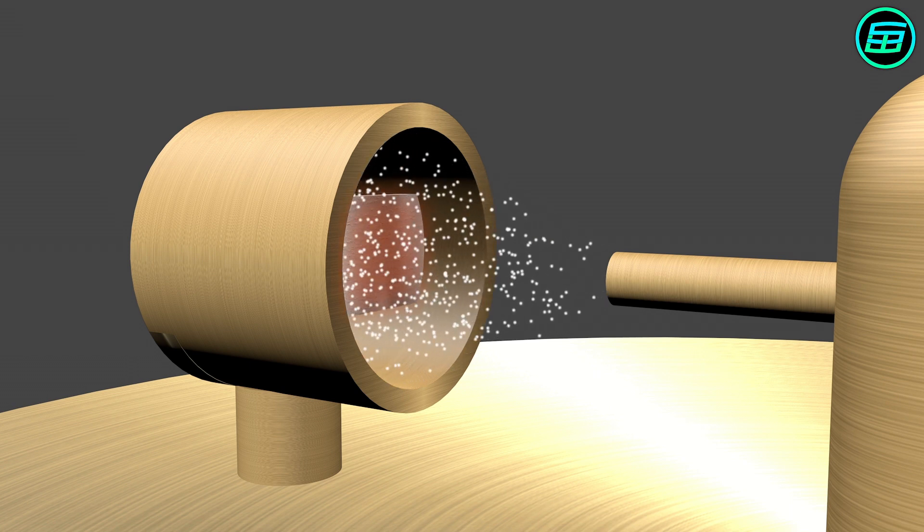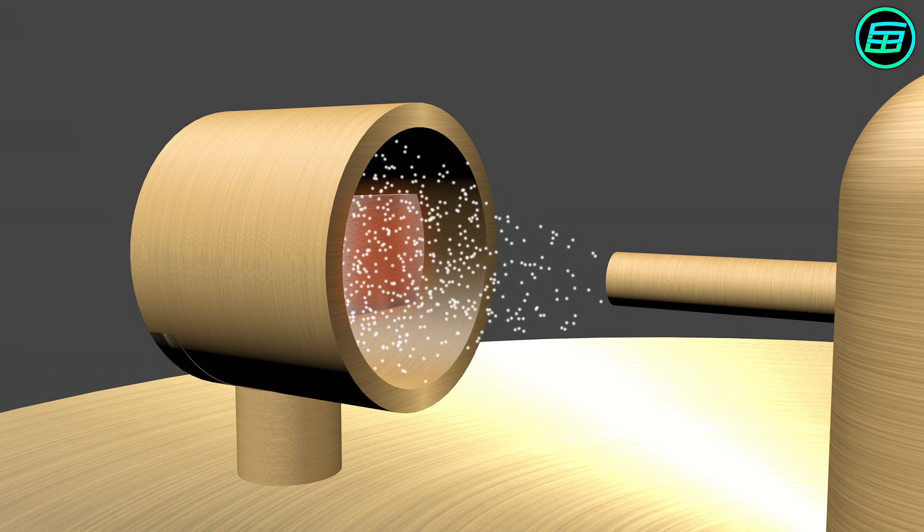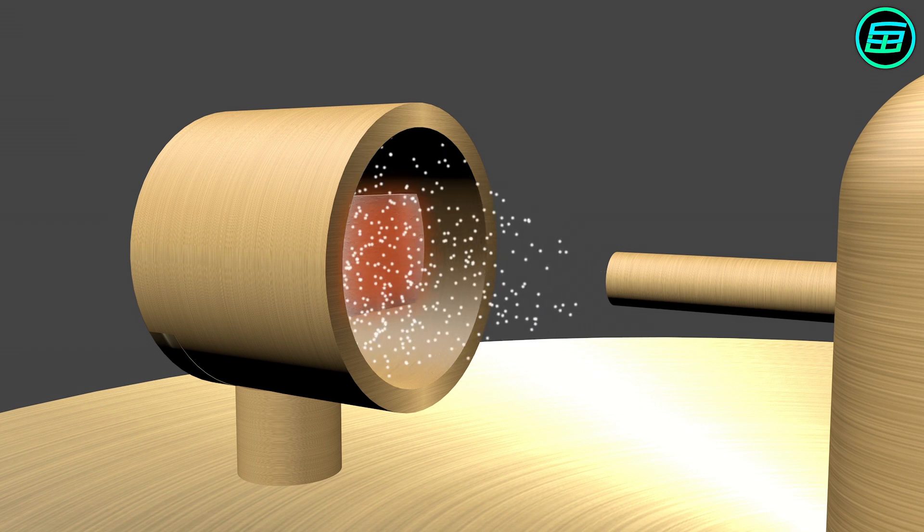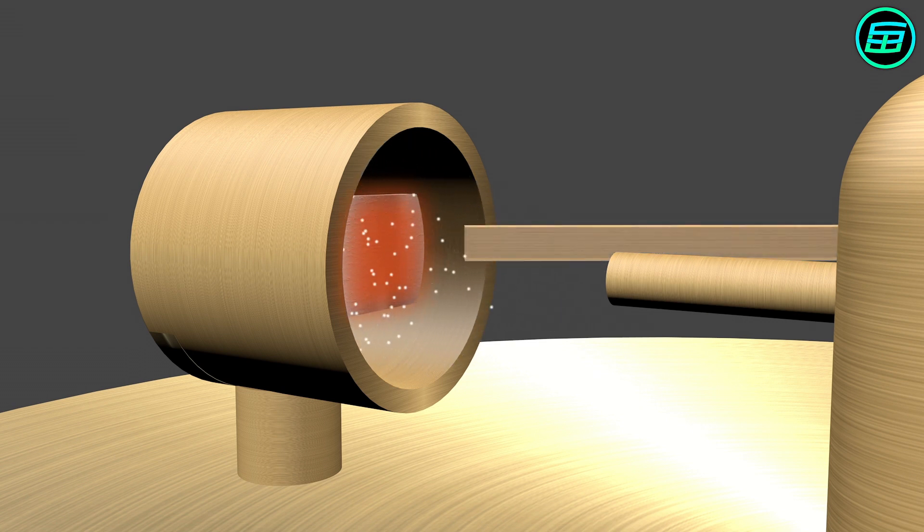This process is very exothermic, which means that a lot of heat is given off. If we held a wooden stick next to the platinum sponge, it would eventually catch fire.